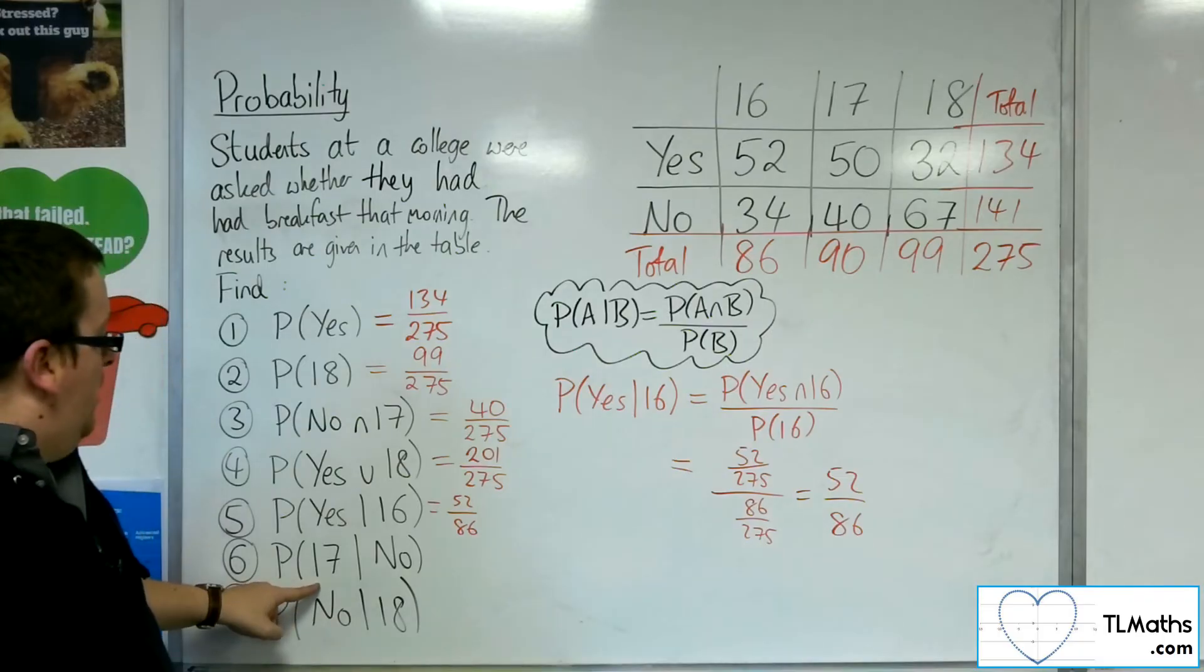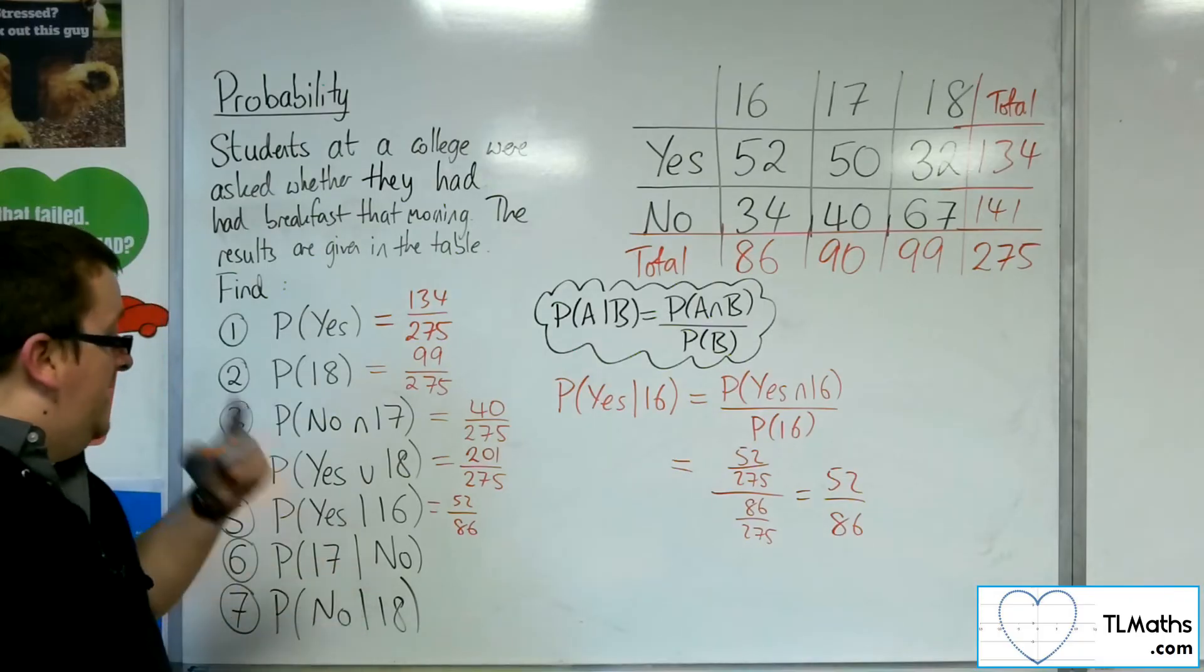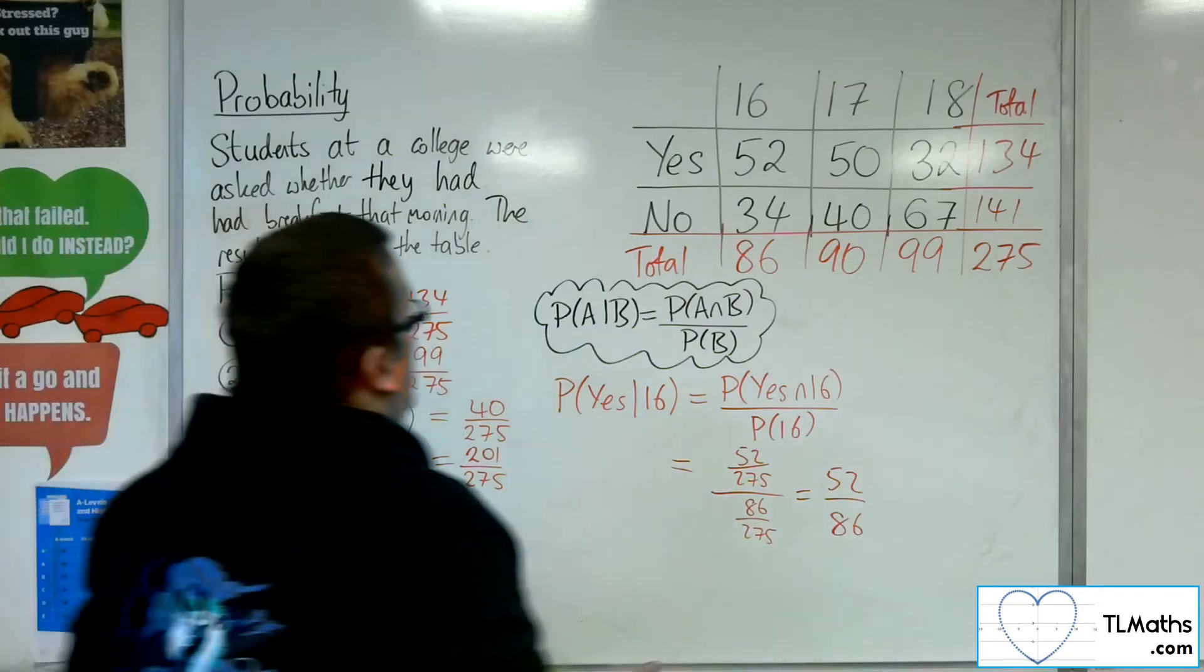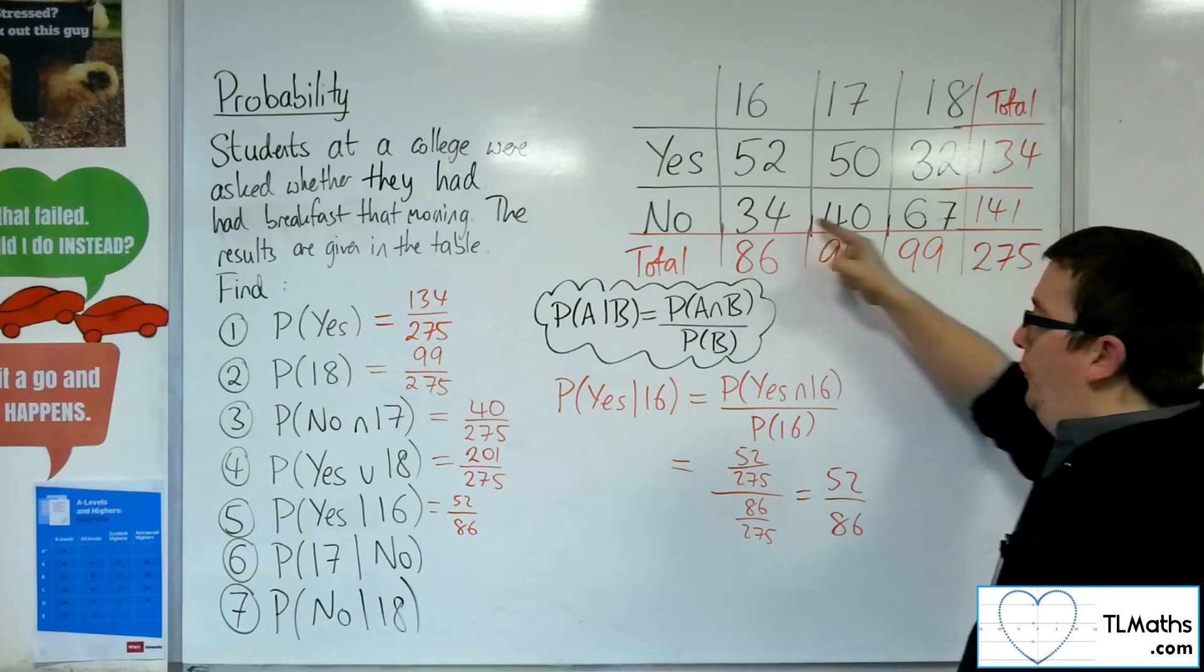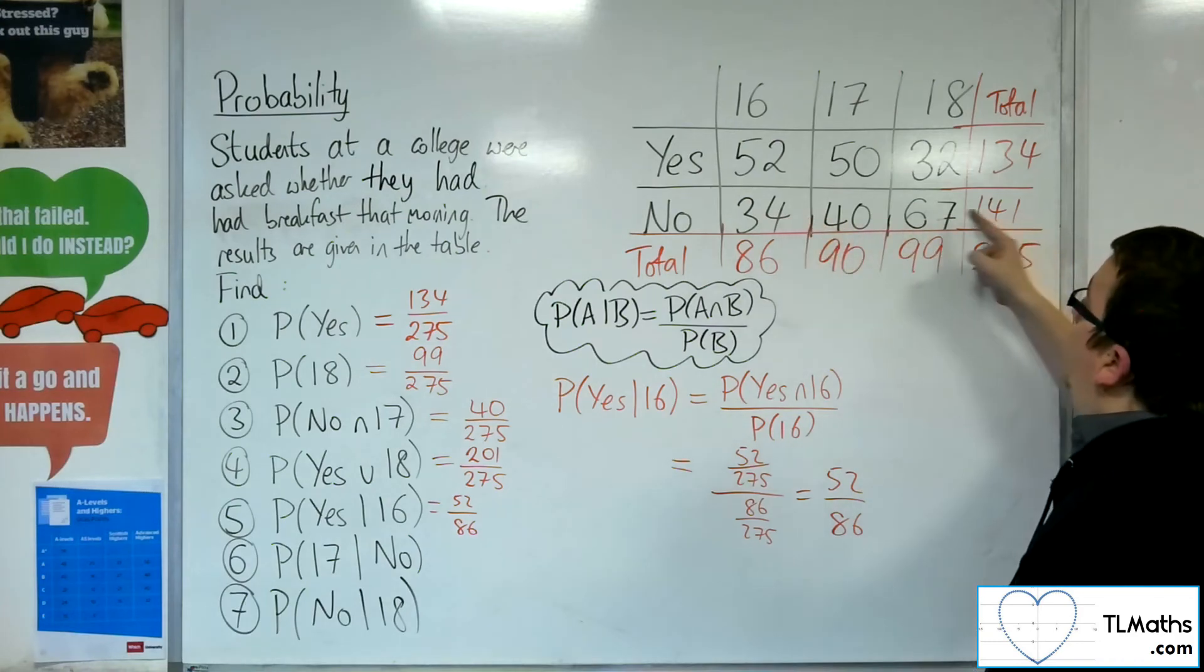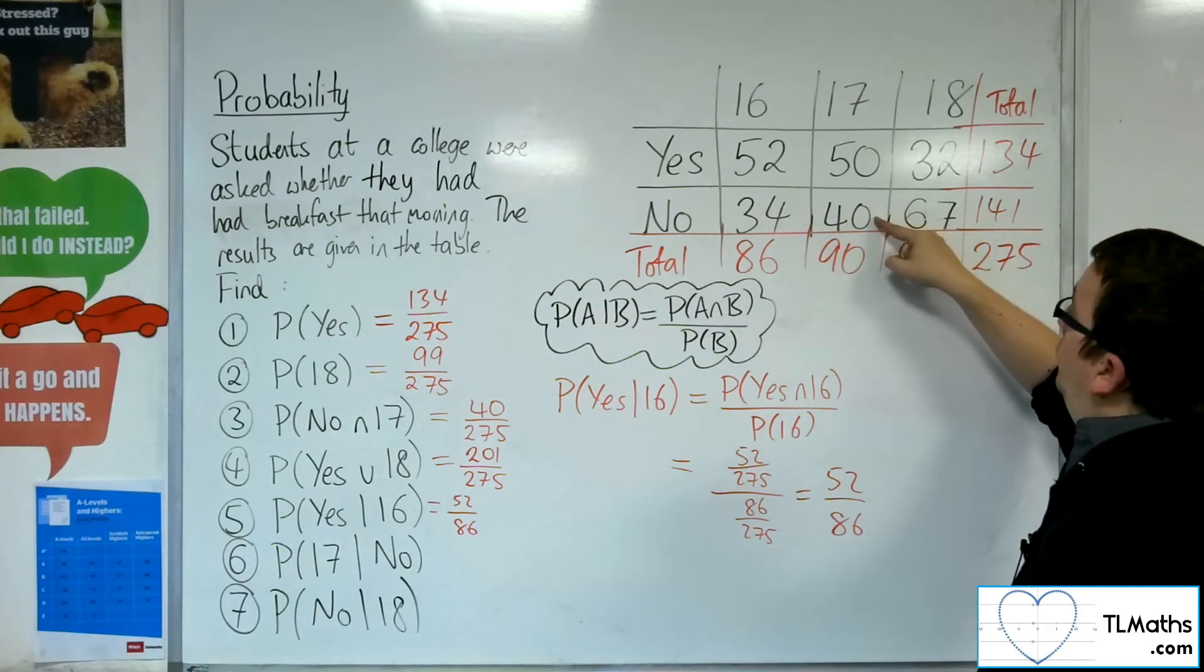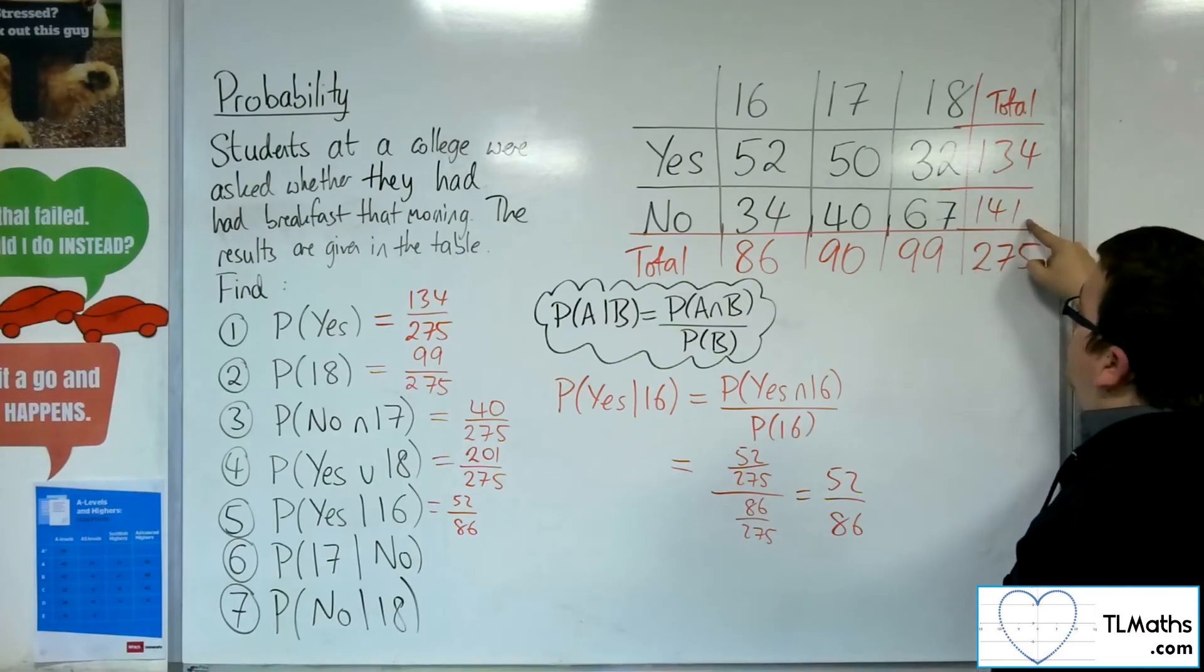The probability of a student being 17 given that they said no. Well, given that they said no, just looking at that column, what's the probability of them being 17? Well, 40 out of 141.